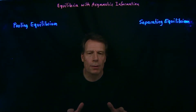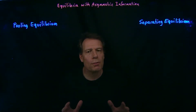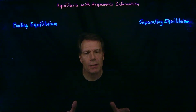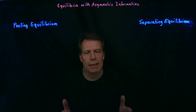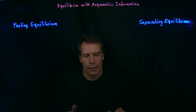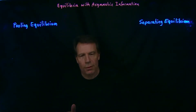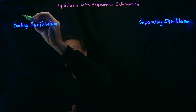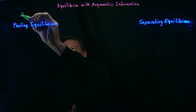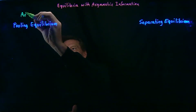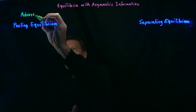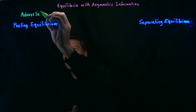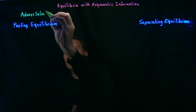If you're in a pooling equilibrium, no information has been revealed, so the full information asymmetry is maintained. Therefore, we have the full consequences of the adverse selection problem that we've been talking about.